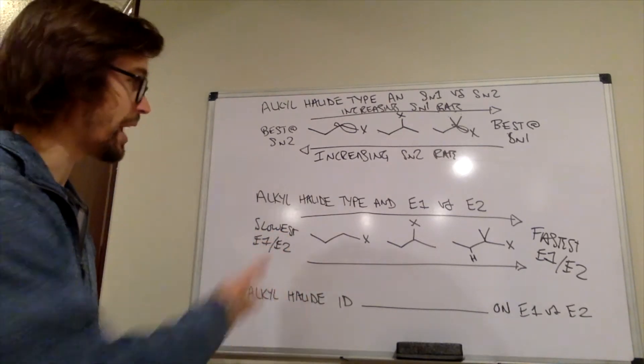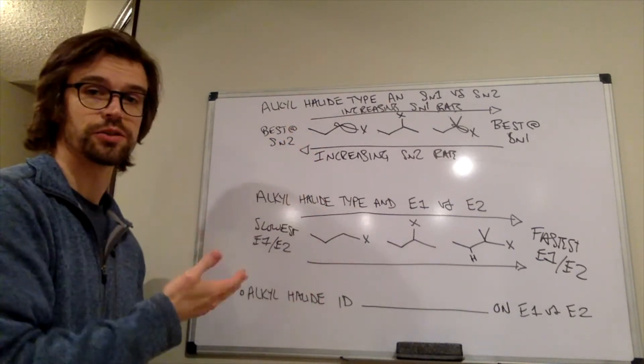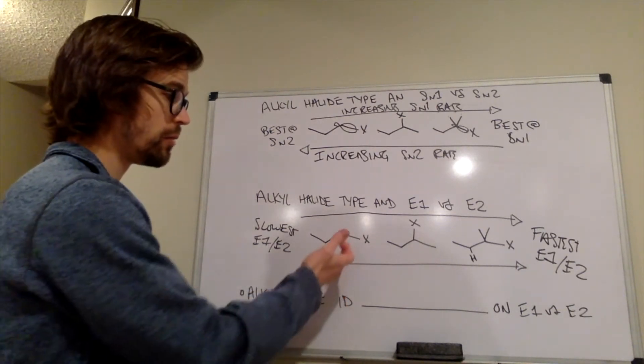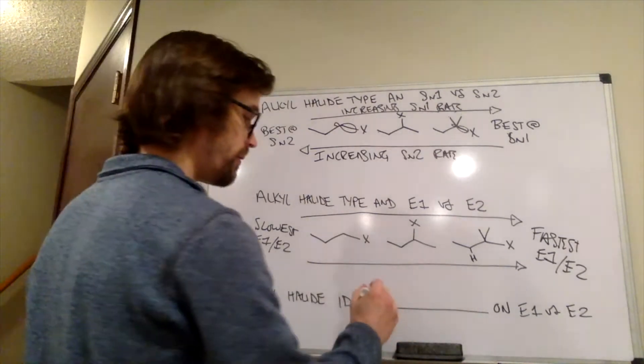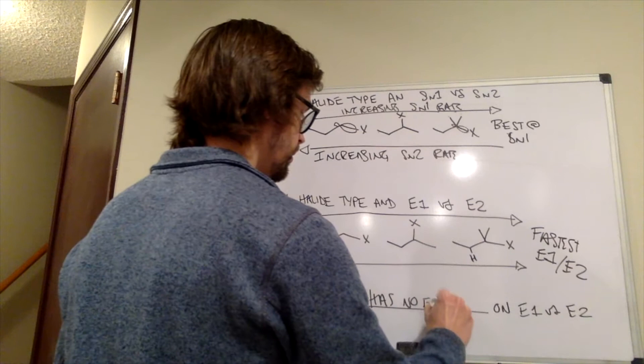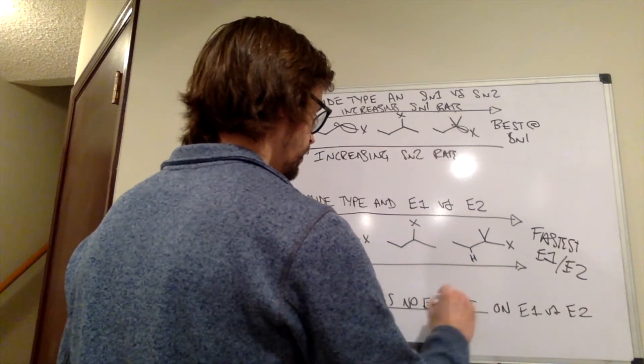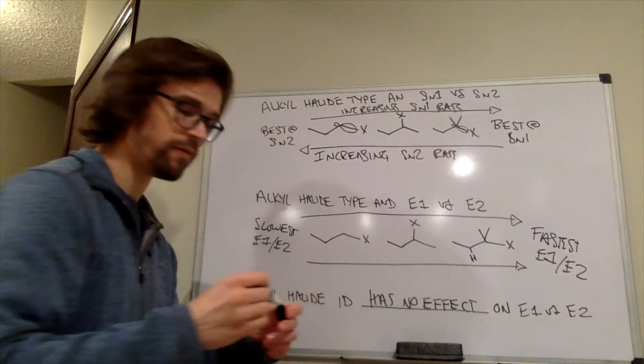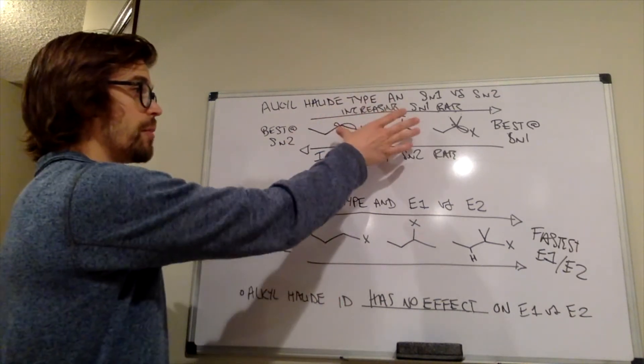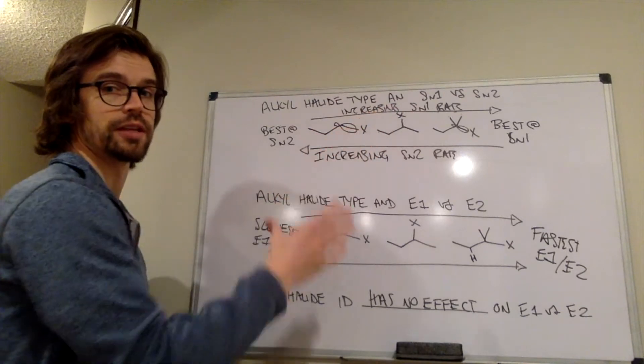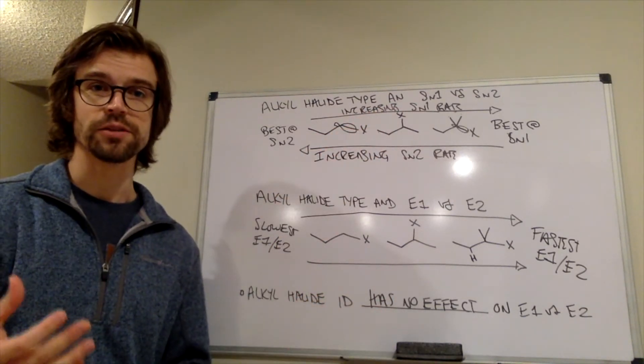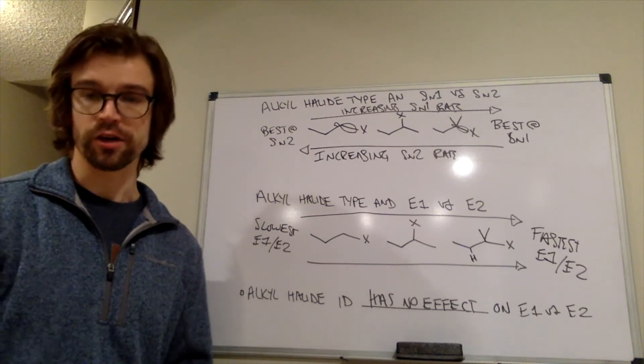So that again is a difference between substitution and elimination. Alkyl halide ID, so whether it's primary, secondary, tertiary, has no effect on E1 versus E2. So here it had a big effect on SN1 versus SN2, but down here there's no effect of the alkyl halide substitution on what type of reaction pathway occurs.